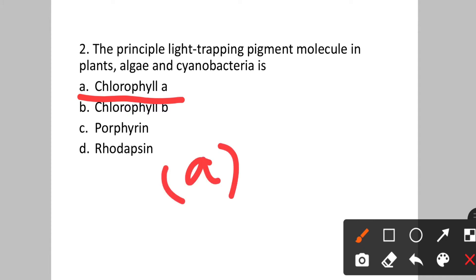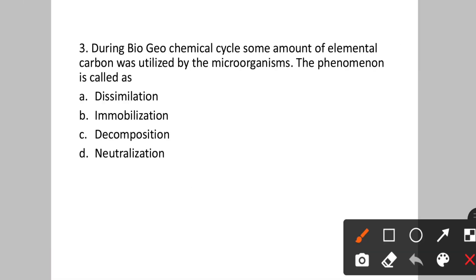Question number three: During a biogeochemical cycle, some amount of elemental carbon was utilized by microorganisms. This phenomenon is called? Option A: dissimilation. B: immobilization. C: decomposition. D: neutralization. The process where elemental carbon is utilized by microorganisms during the biogeochemical cycle is called immobilization. Option B will be the correct answer.